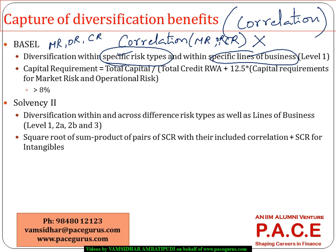Within a line of business or within a business unit, there could be diversification. That is what we typically call the level one kind of diversification, and Basel 2 is addressing only level one — identifying diversification benefits within a risk category or within a specific line of business, but not across risk categories and across lines of business.